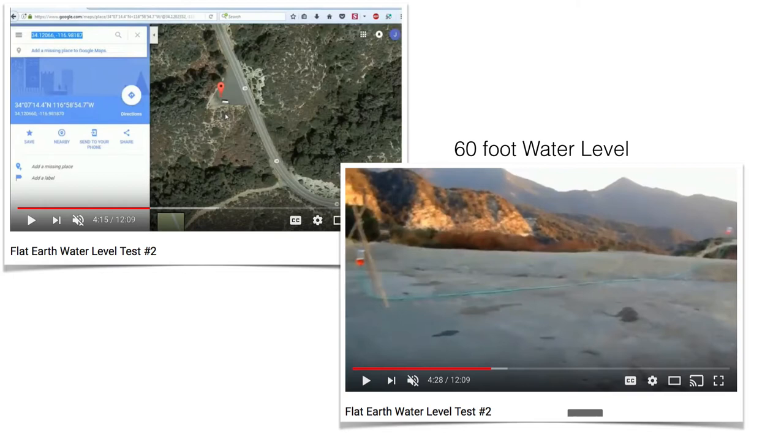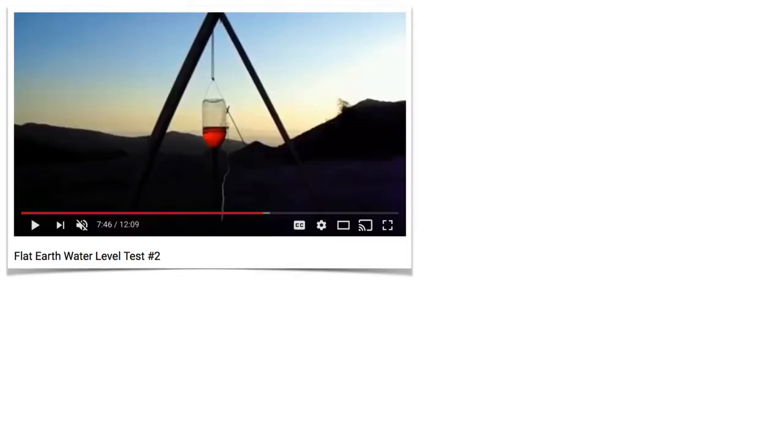So John actually made a 60-foot water level. He's up there in this parking lot up in the mountains in California, and he made a 60-foot water level. You can see that in the lower right corner with the green hose and the two reservoirs with red liquid in them.